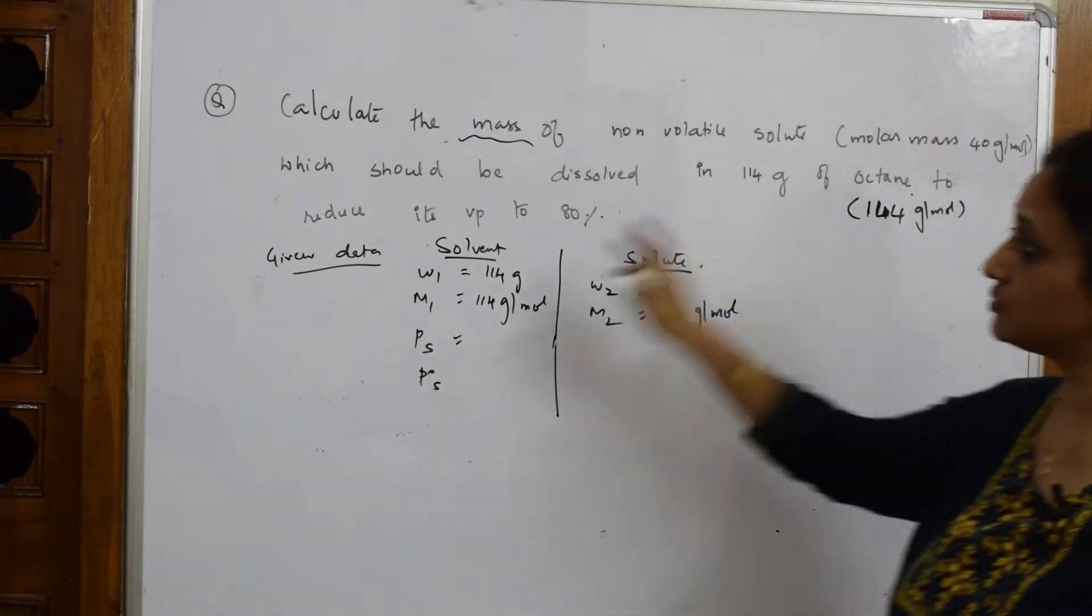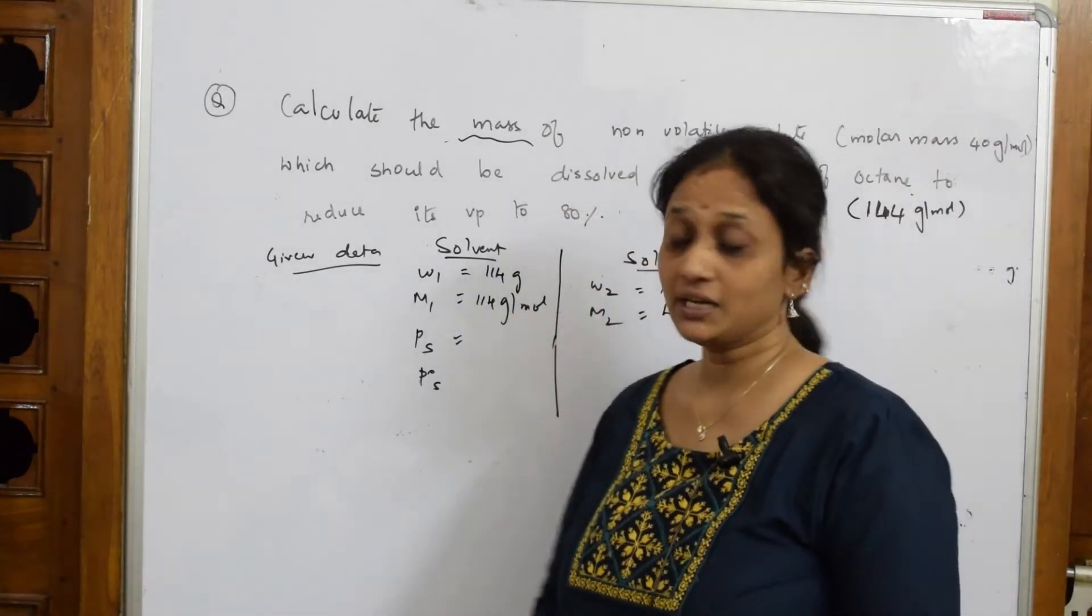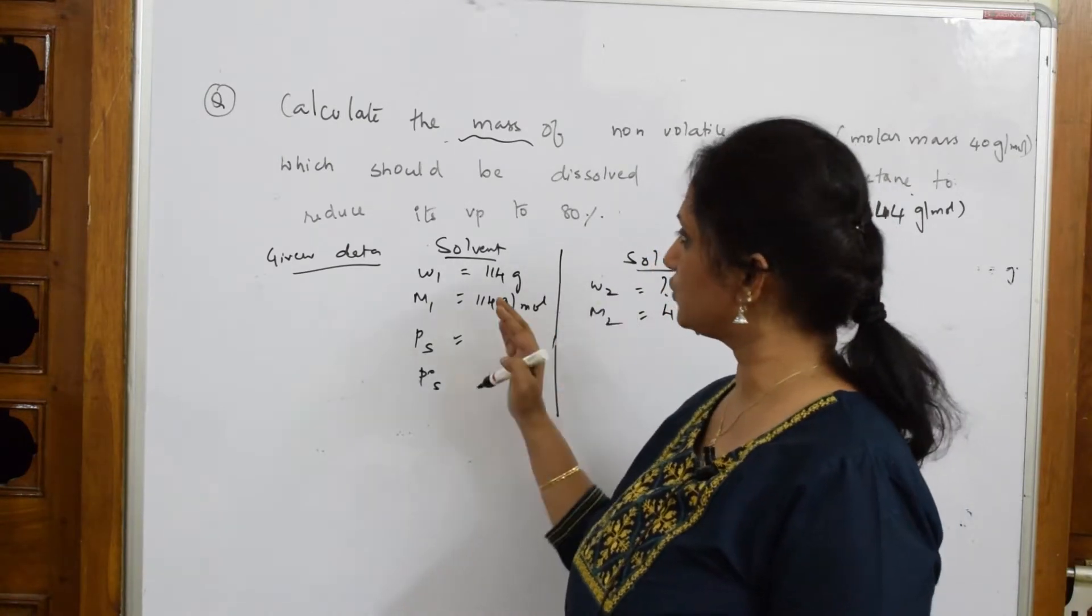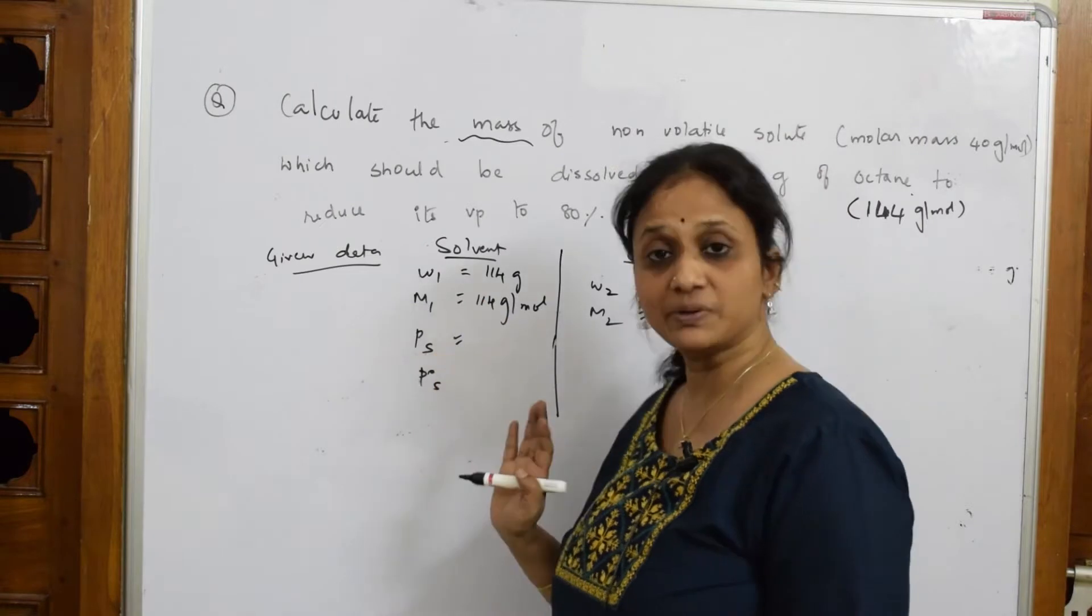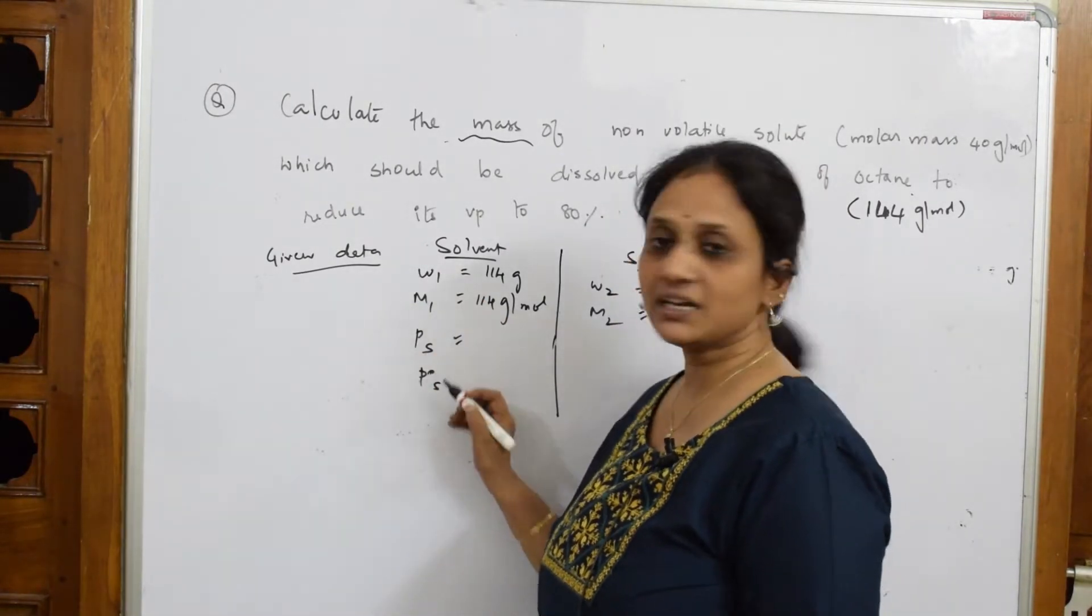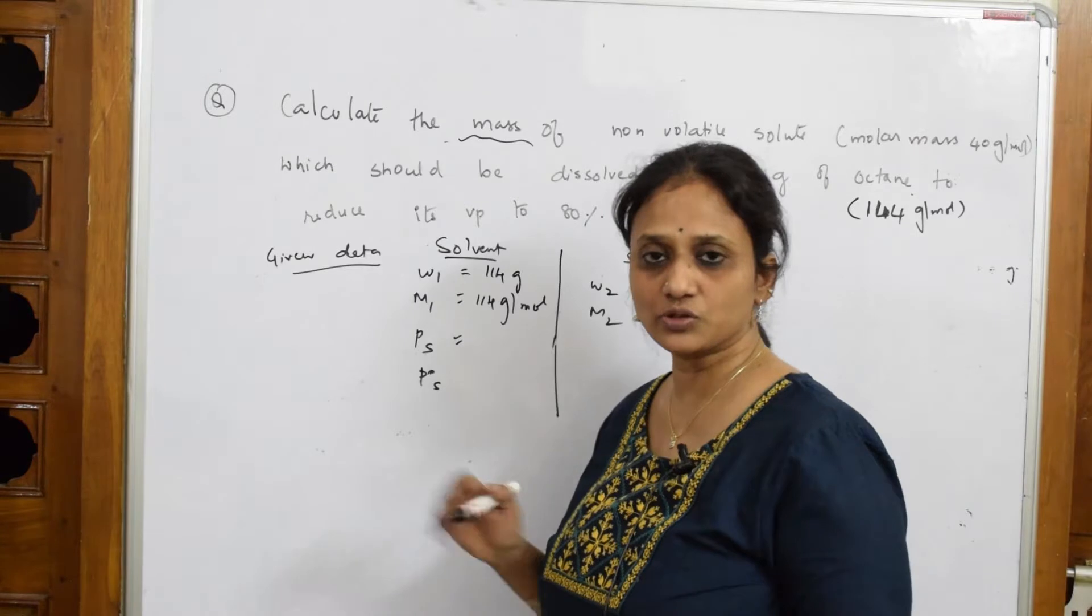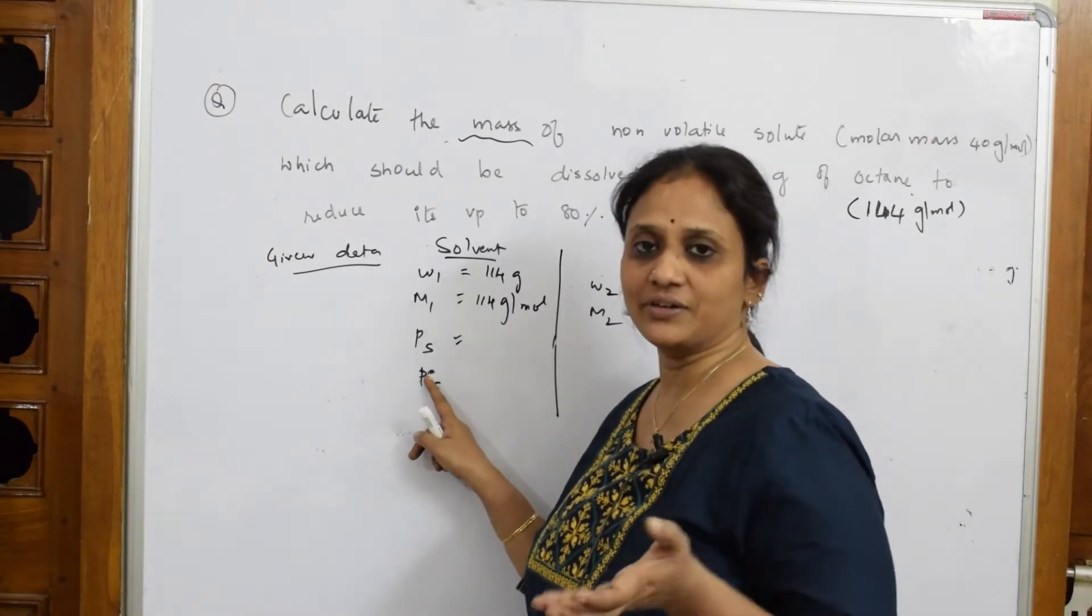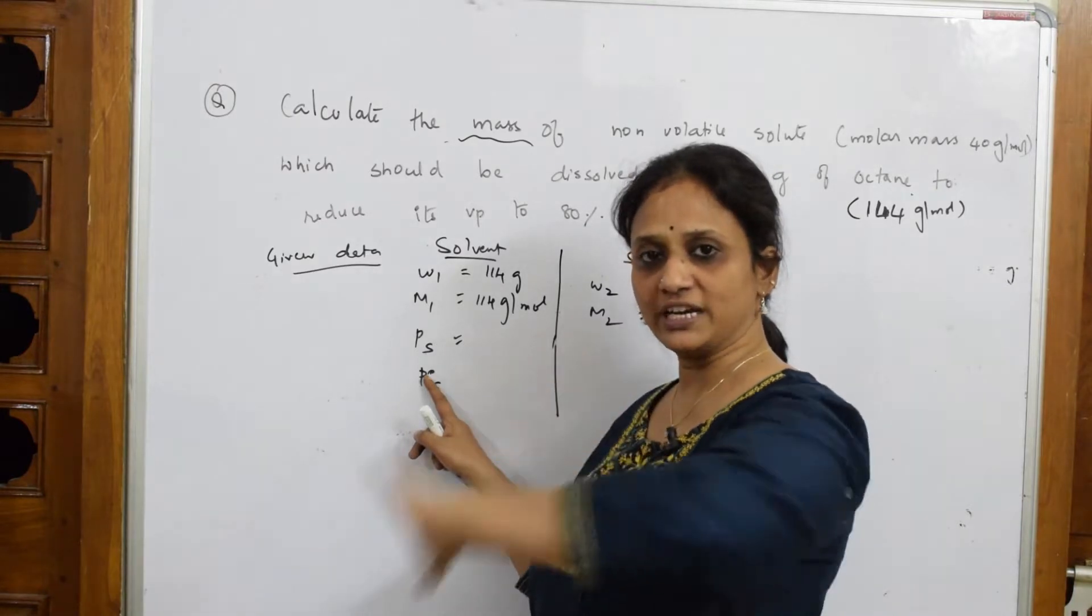We need to reduce the vapor pressure to 80 percent. If we consider the original vapor pressure of the pure solvent as 100, it is reduced to 80 percent.